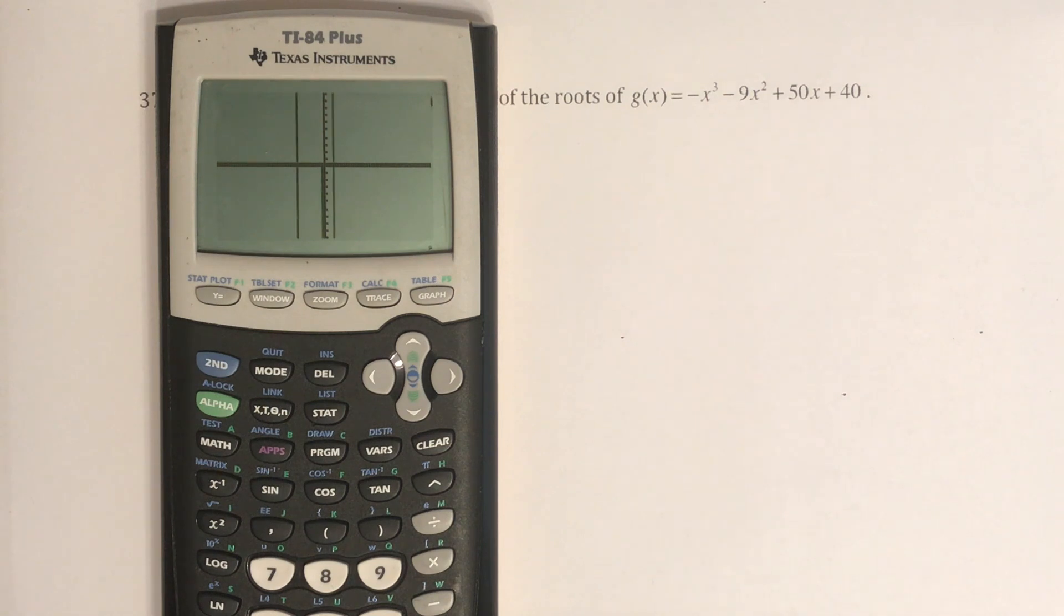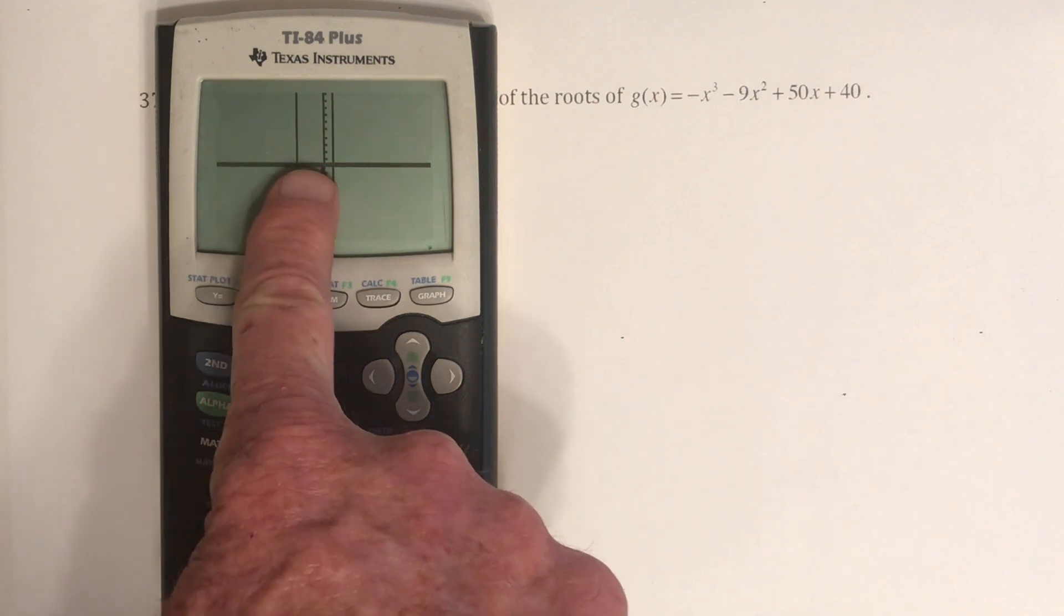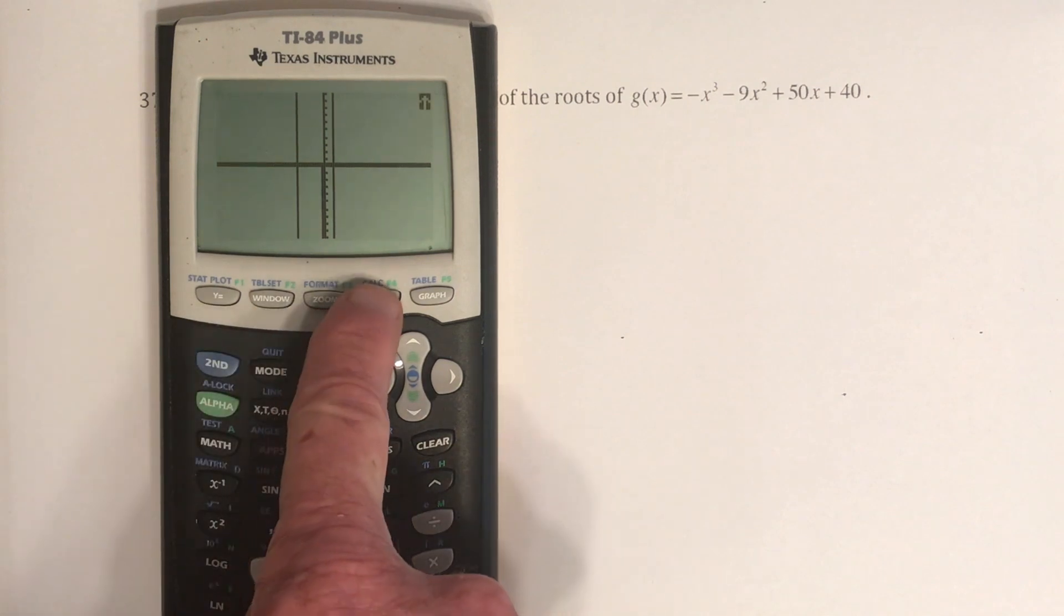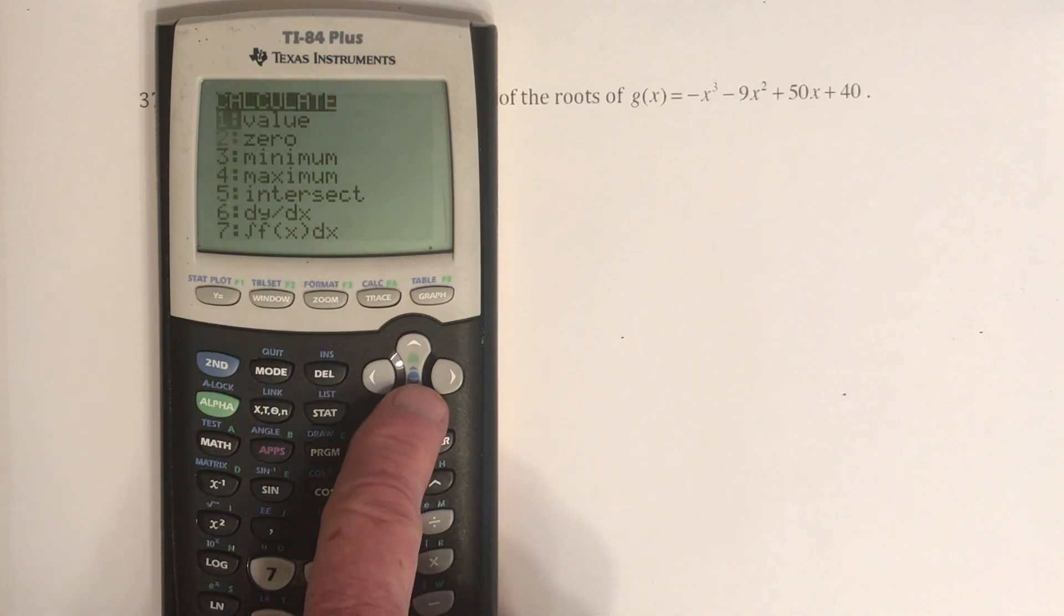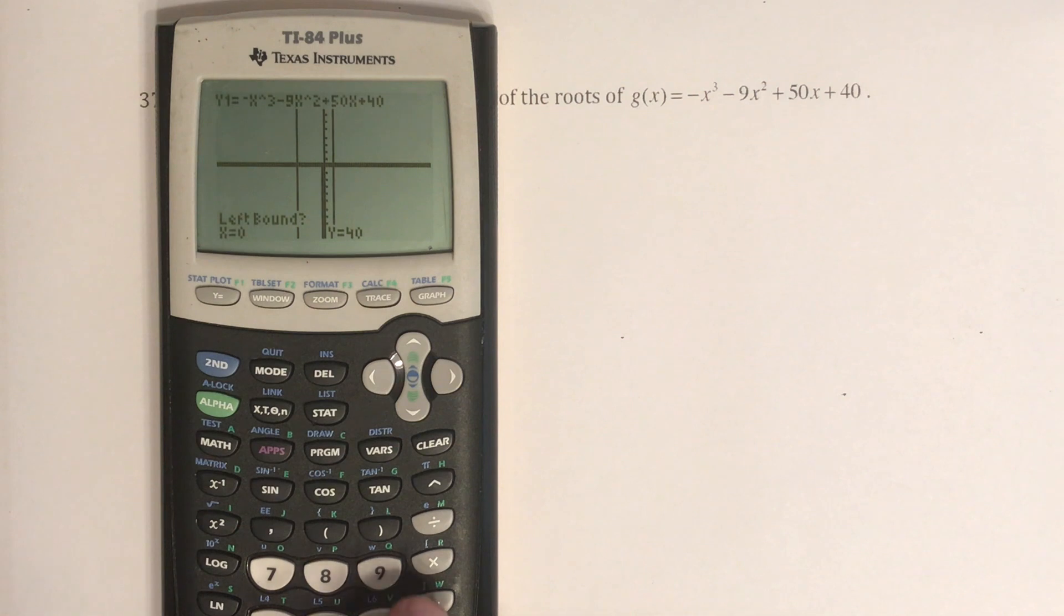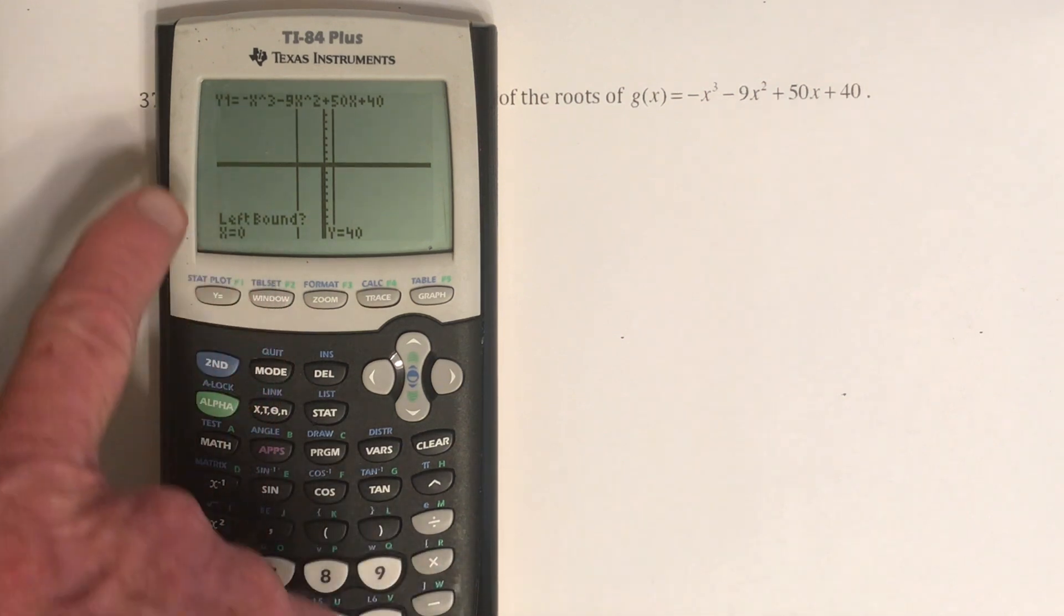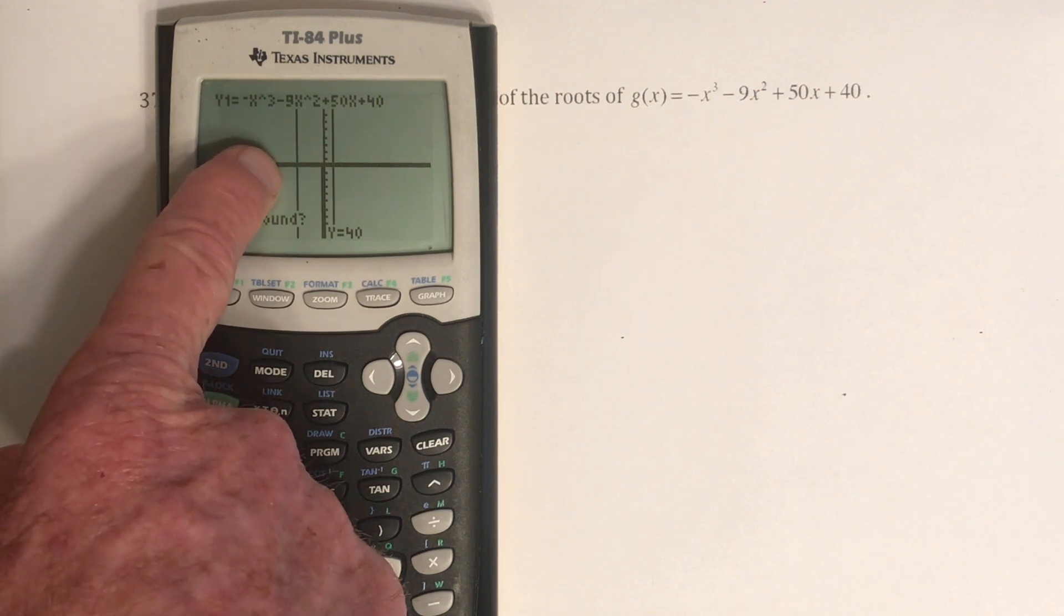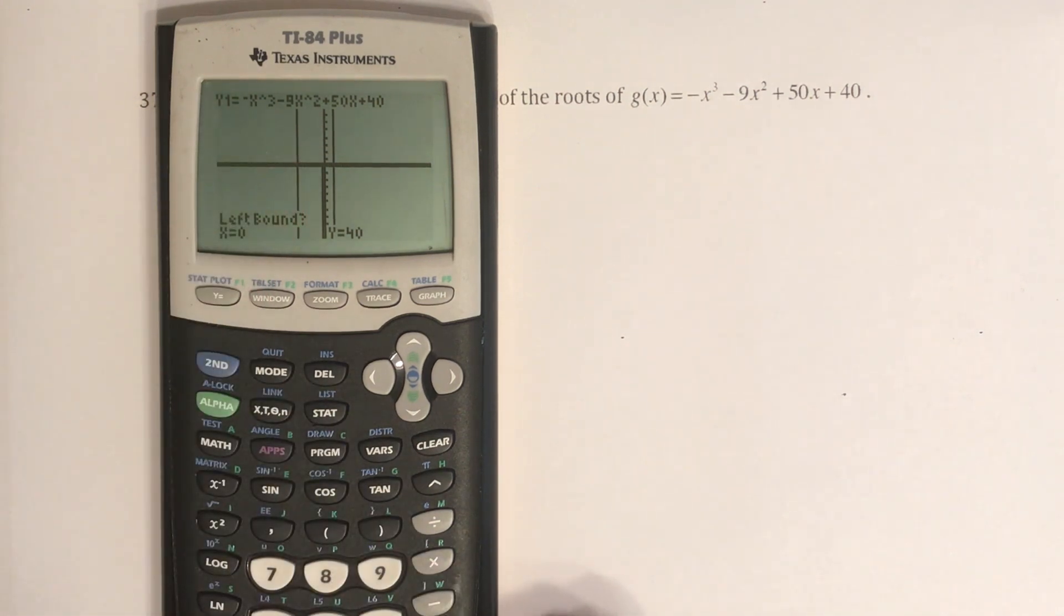And then 1, 2. Oh, so it looks like there's actually three solutions in here. All right, so to find this one, you go to second, calculate, and then the 0, and then you just have to pick something on the left. Well, I know over here is negative 30, so maybe from negative 20 until negative 5. And then my guess, I don't know what to guess, so I'm just going to leave x equals negative 5 and hit enter.